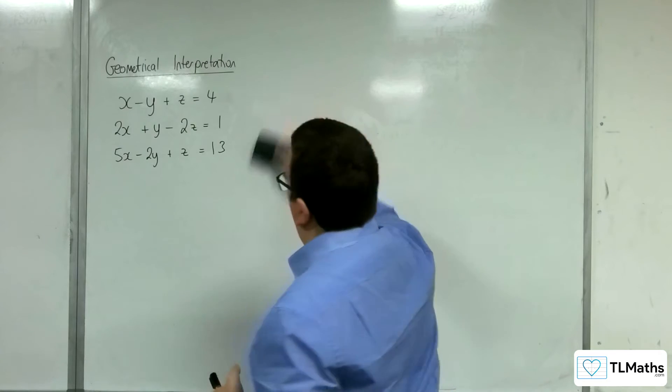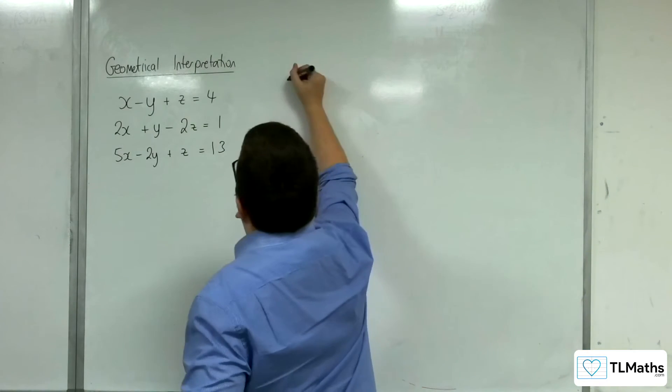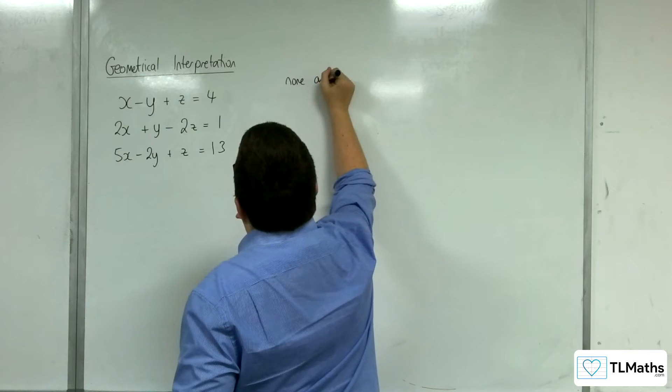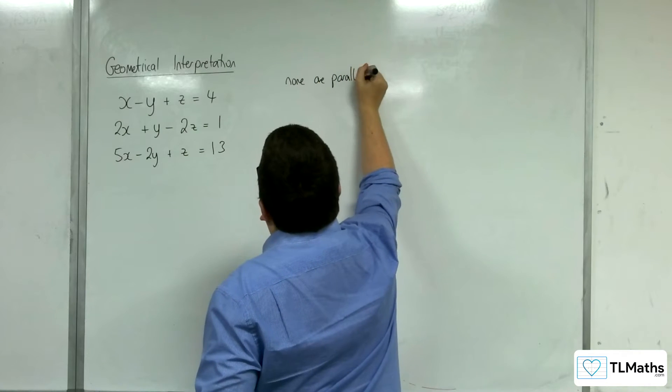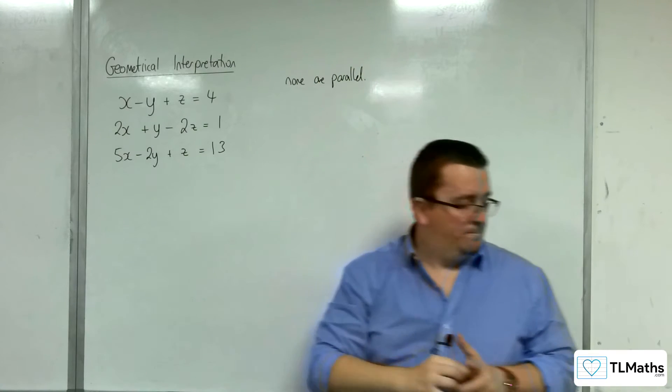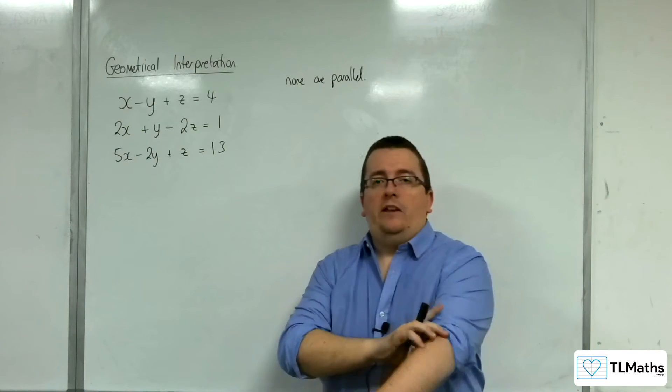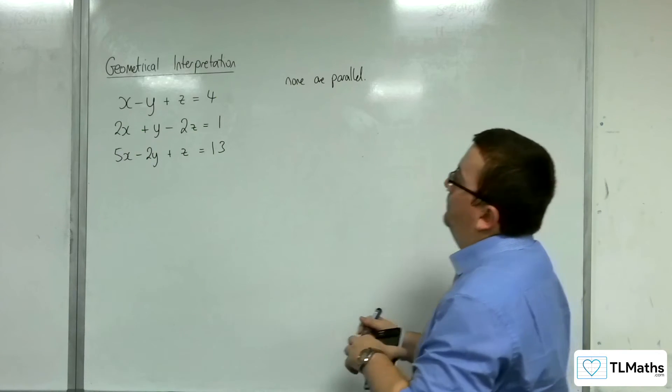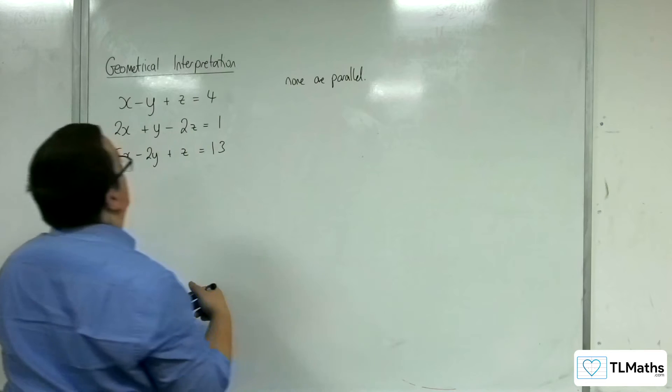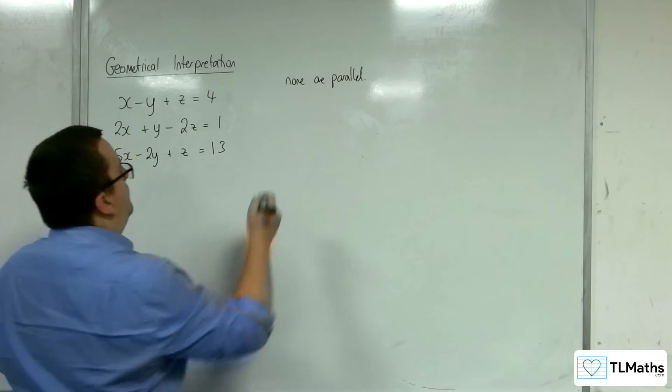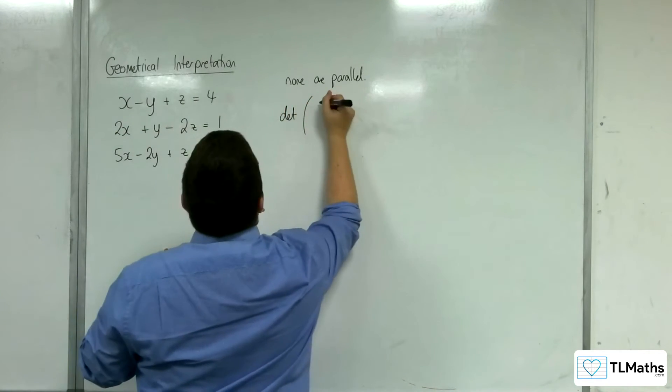So they're not parallel, none of them are parallel. So that's the first check. Next check is we can work out the determinant of the coefficient matrix. So the determinant of the matrix.